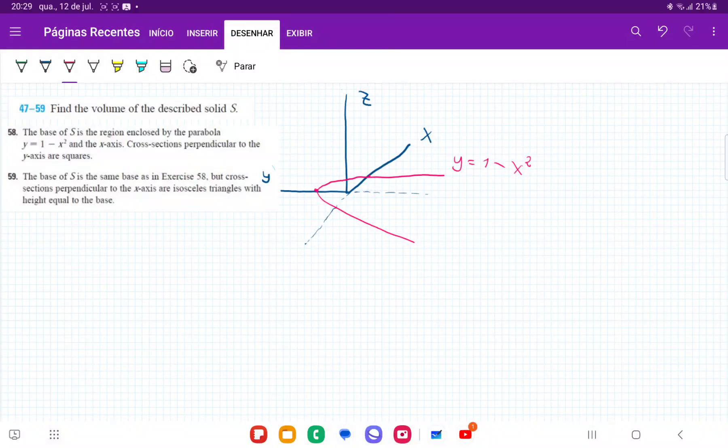So for number 59, the base of our solid is the same as number 58, which is this parabola y equals 1 minus x squared.